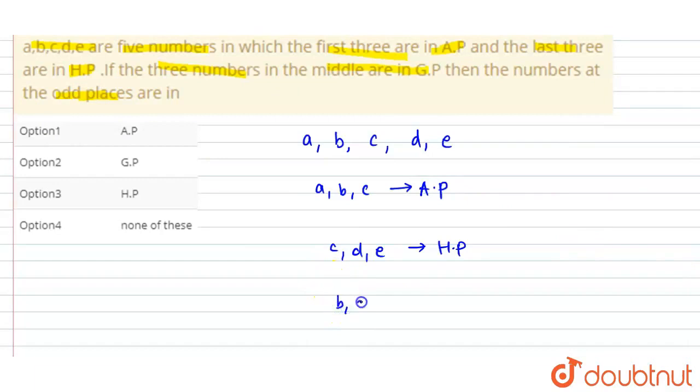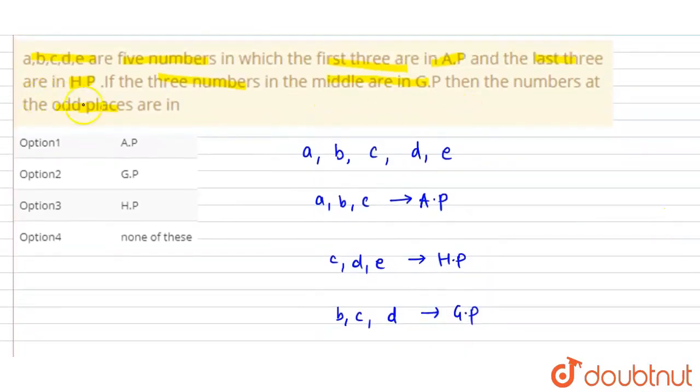3 numbers in the middle are in GP. Which is in the middle? This is BCD. So, B, C, D are in GP. We have asked: the numbers at odd places are in what? Which are in odd places? This is first place, this is third place, and this is fifth place. So, A, C and E. This means AP, GP, HP or none?